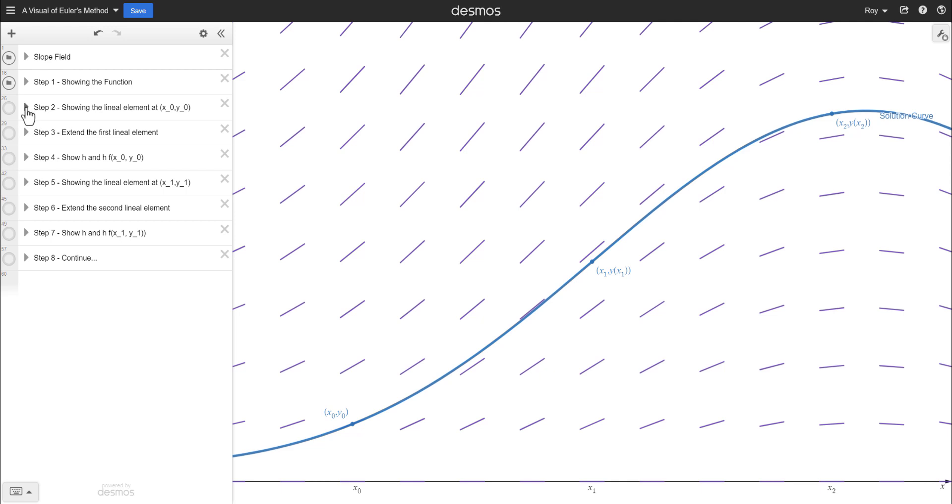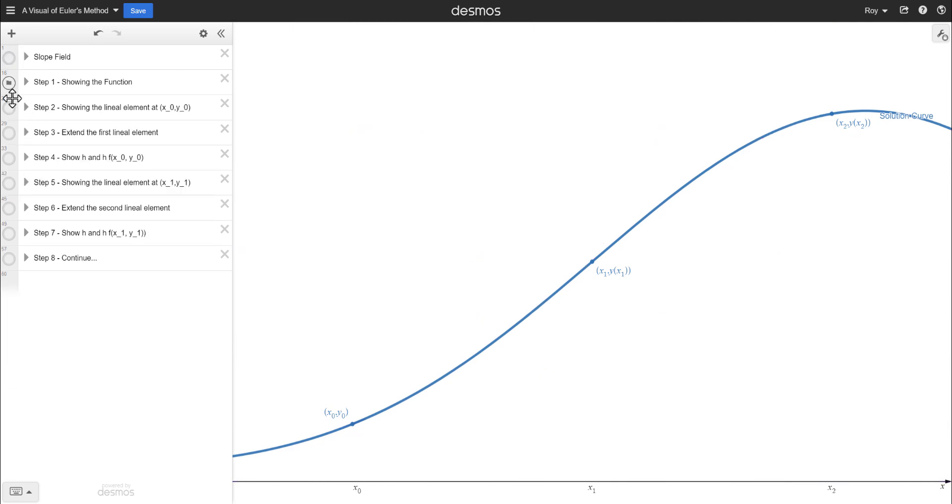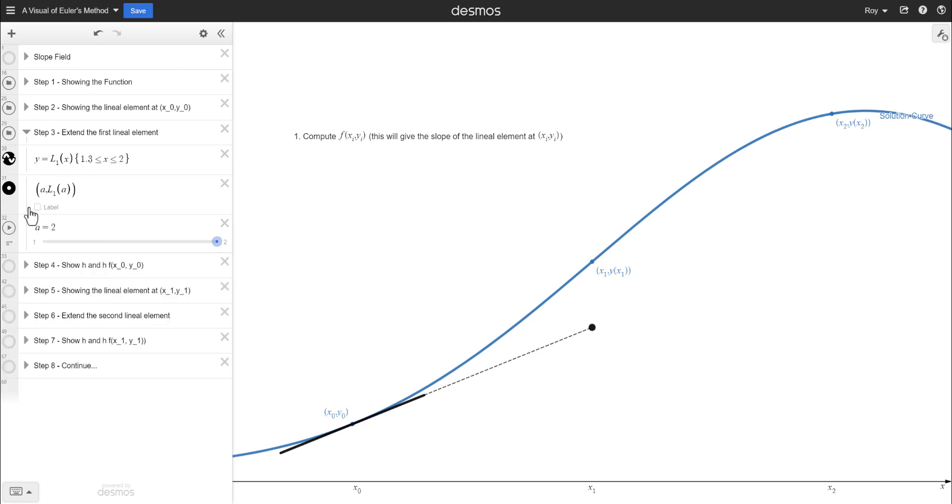And they won't see this over here when I create the video. But I'll turn off the slope field. The first thing we do is we take a look because we have the slope field and we have what Y prime is. We can then determine the slope of the tangent line to the solution curve at our initial condition. We then extend that tangent line out. And I can press play and just showcase this.